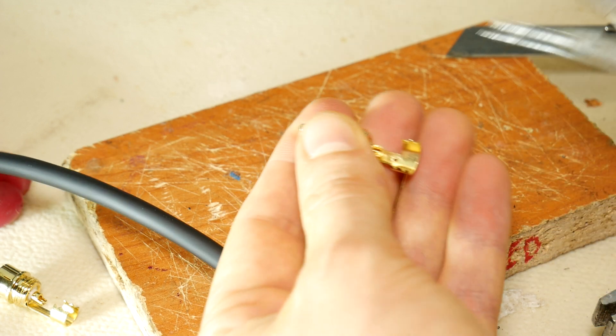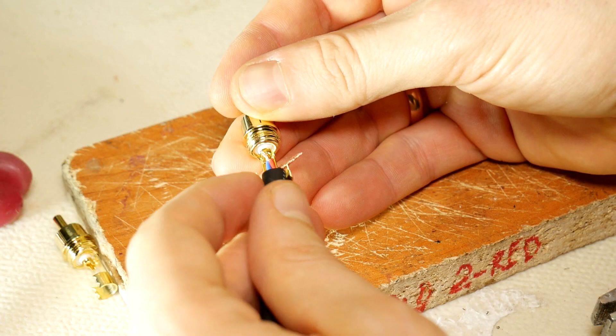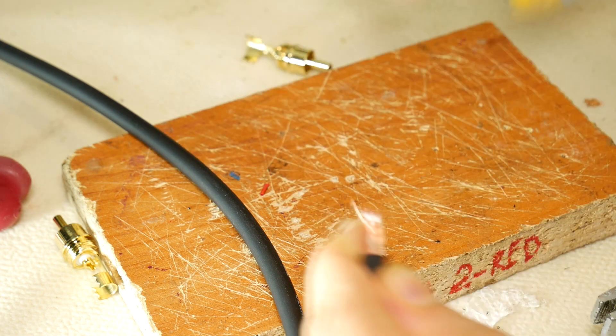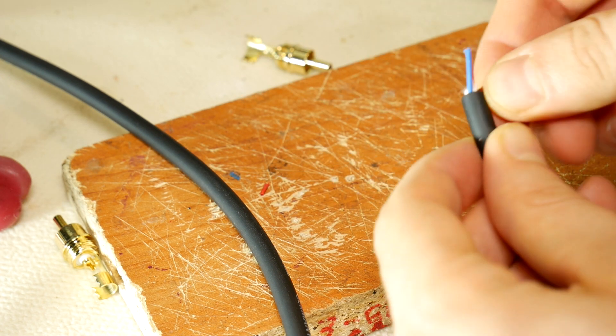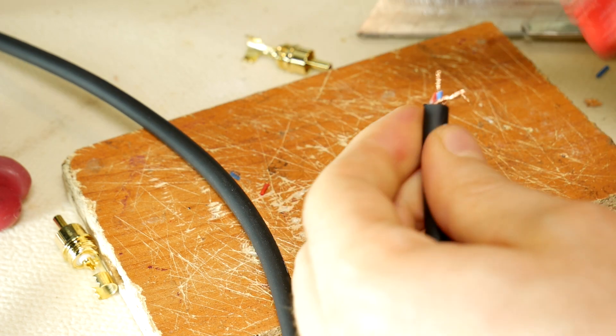If cable doesn't fit the inner RCA connector then stretch out the bigger place for it and try it on again. Then prepare the second end of the cable in the same way so we can get to the soldering as soon as possible.